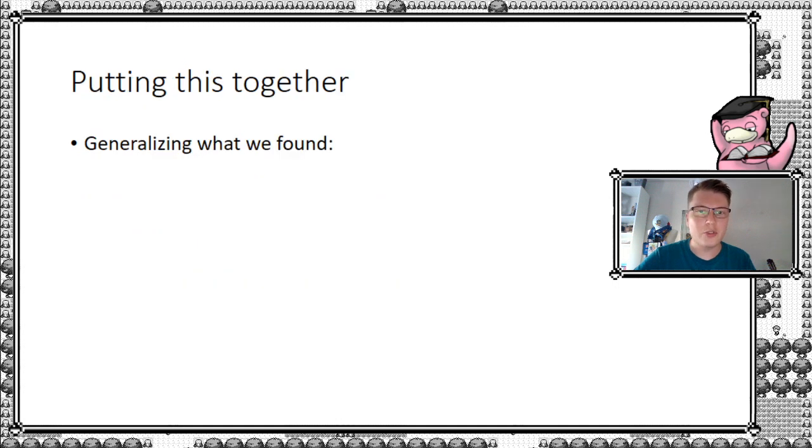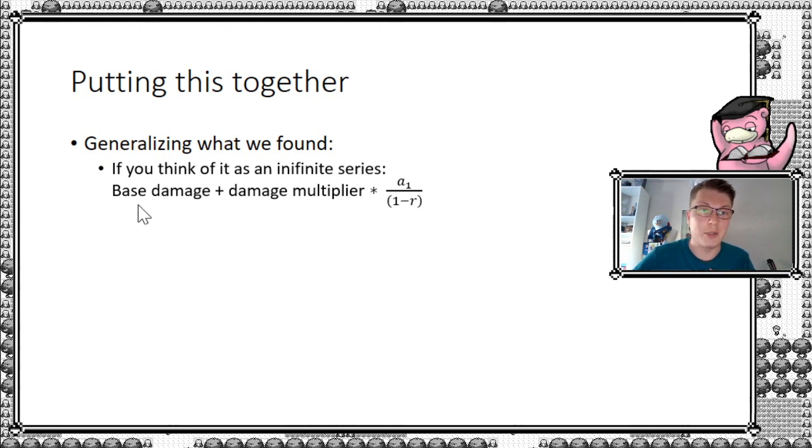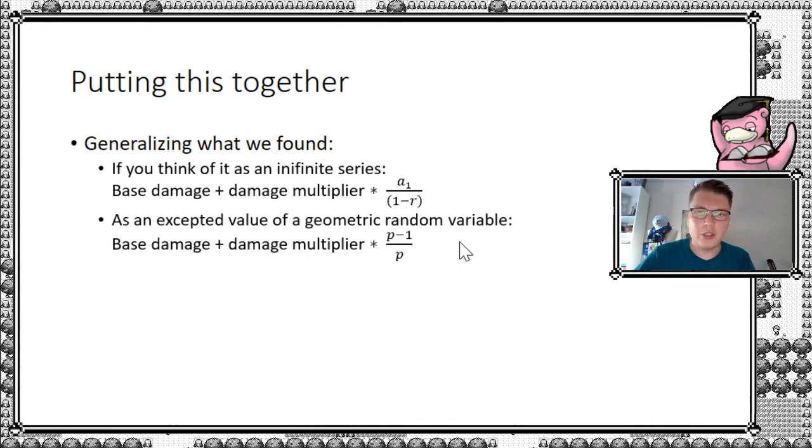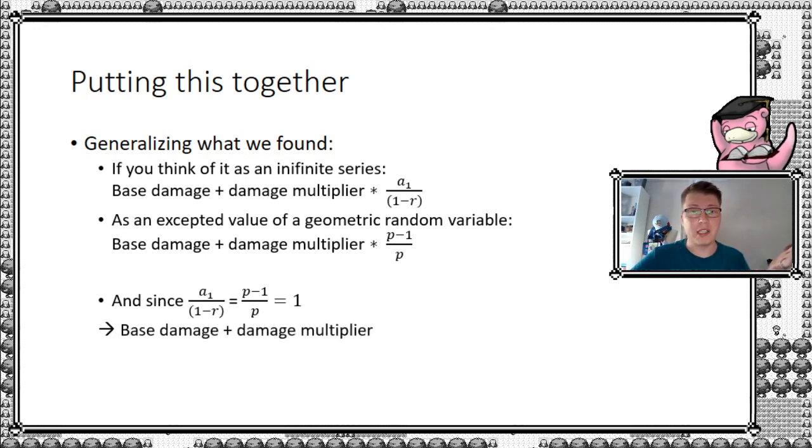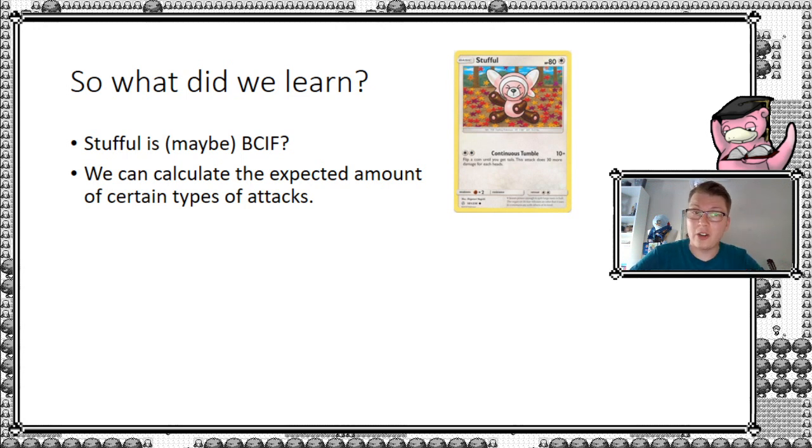I think you have a little memory. That means, in other words, base damage plus damage multiplier. Because I can calculate it for continuous tumble. It will be the same for any other of these types of attacks. The only difference is the damage multiplier. But this expected value, because they all say flip until you get tails. They therefore have the same expected value. So, okay. Let's look into generalizing what we have found. Well, we used two different ways of doing this. We first can think of it as an infinite series. Then we actually have the following formula, which is base damage plus damage multiplier, multiplied by the sum of an infinite series. This turned out to be 1, right? And then we can do it again as an expected value of a geometric random variable, which is the same formula, essentially, but now with P minus 1 divided by P. Well, I've just shown them both of these are 1. So we can actually boil this down to base damage plus damage multiplier. So that also means Stuffle might be the best card in format. Best counter, best card, B, C, E, F, no matter what, how you take the C for here. But that is, of course, if you can flip an abnormal amount of hits.